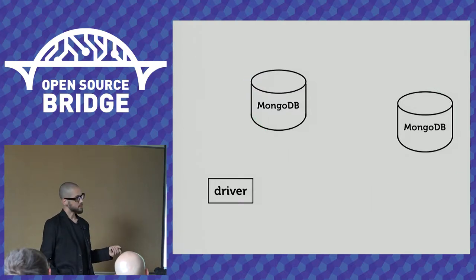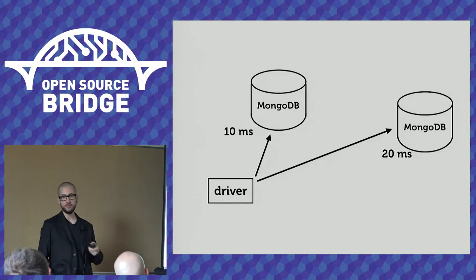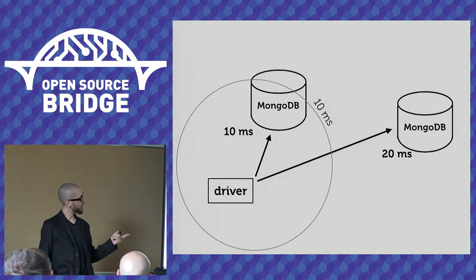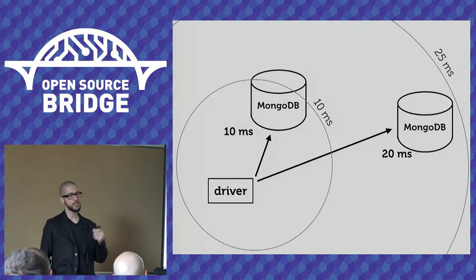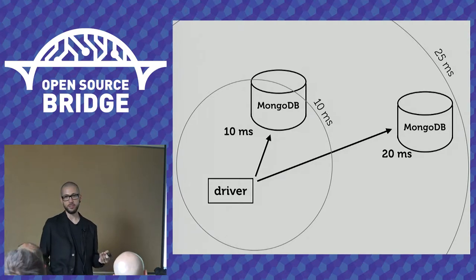The feature we wanted to implement was called local threshold. The idea is that the driver measures its round trip time to each server, writes down the round trip time to the nearest server, then adds 15 milliseconds to that number, and load balances randomly among all servers within that threshold — in this case a 25 millisecond radius. Any server whose round trip time is less than or equal to 25 milliseconds should be equally eligible for a read.